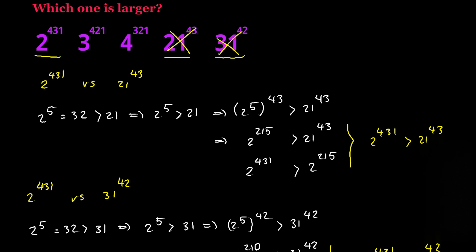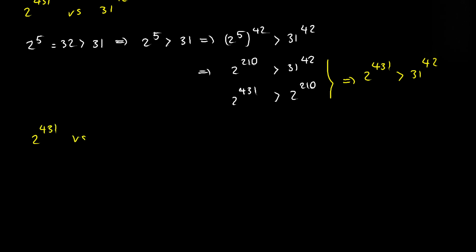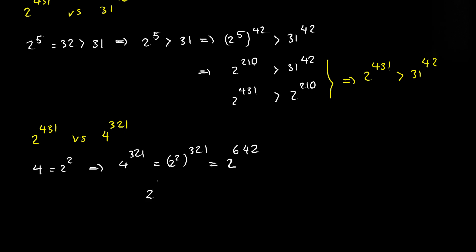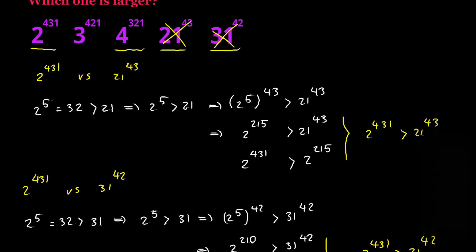Next I'm going to compare the first number with the third number — 2 to the power of 431 with 4 to the power of 321. Let's start with the fact that 4 equals 2 squared. If I raise both sides to the power of 321, I get 4 to the power of 321 equals 2 squared raised to the power of 321, which gives 2 to the power of 642. Since 2 to the power of 431 is less than 2 to the power of 642, the first number cannot be the largest.